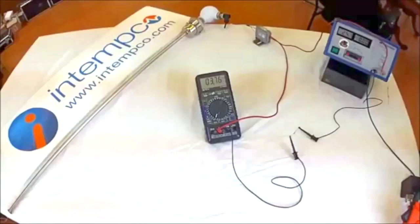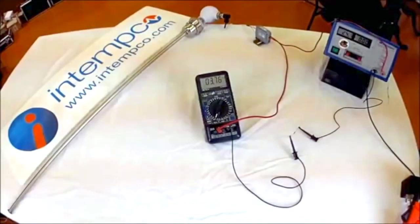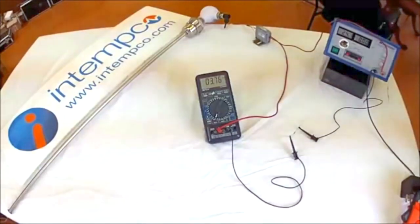So these are the basics for a typical 4 to 20 milliamp sensor current loop. These same basics can be used for pressure, temperature, humidity, or any other 4 to 20 milliamp transmitter.